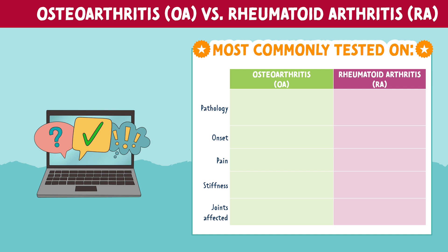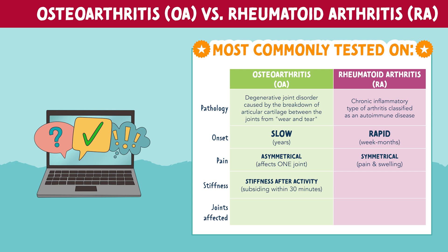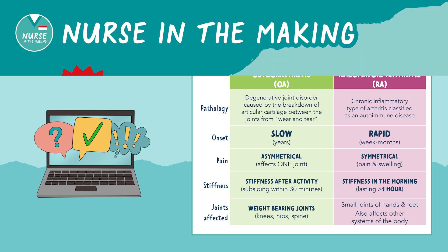Let's look at the most commonly tested points regarding OA versus RA. OA is a degenerative joint disorder caused by breakdown of articular cartilage from wear and tear, where RA is a chronic inflammatory arthritis classified as an autoimmune disease. The onset of OA is slow and the onset of RA is rapid. Pain is asymmetrical in OA affecting one joint, where in RA the joints are affected symmetrically. Patients with OA have stiffness after activity, while those with RA see stiffness in the morning lasting greater than an hour. Joints affected in OA are weight-bearing joints like the knees, hips, and spine, where in RA, small joints of the hands and feet are affected, and it also affects other systems of the body.